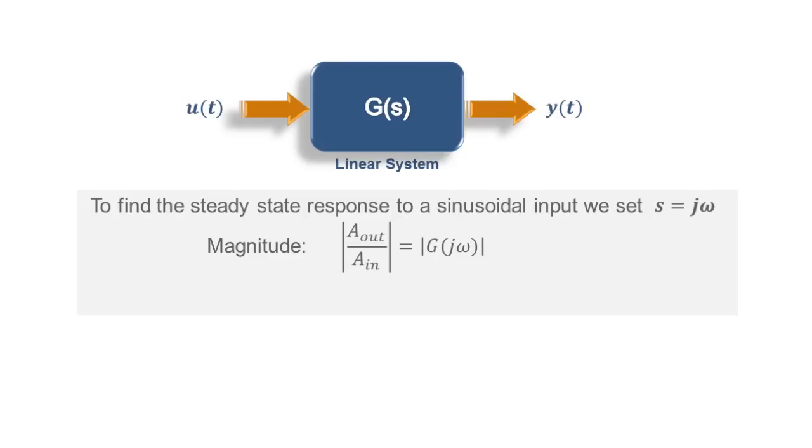The resulting expression for G will be a vector in the complex plane, part real, part imaginary. The magnitude of that vector is the gain of the transfer function, or in other words, equivalent to the amplitude gain from the input to output sine waves.